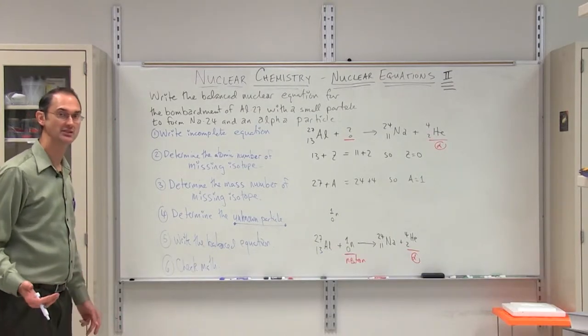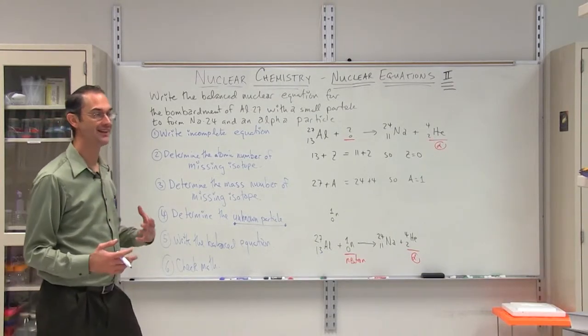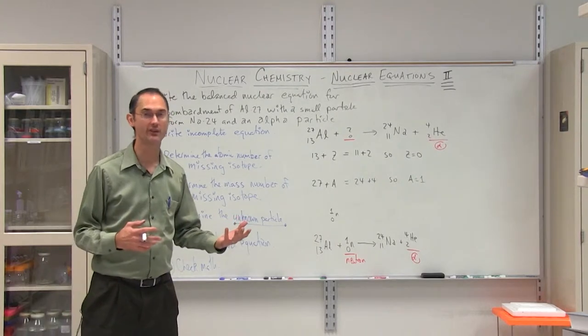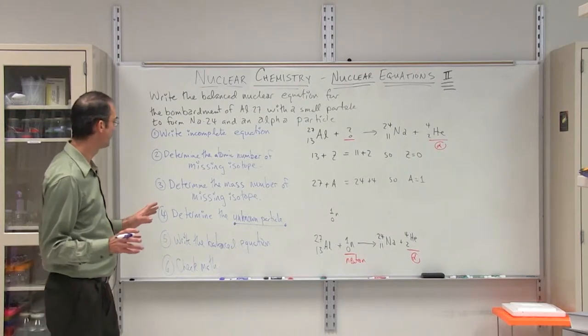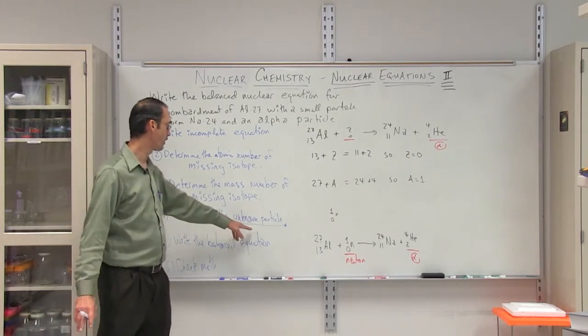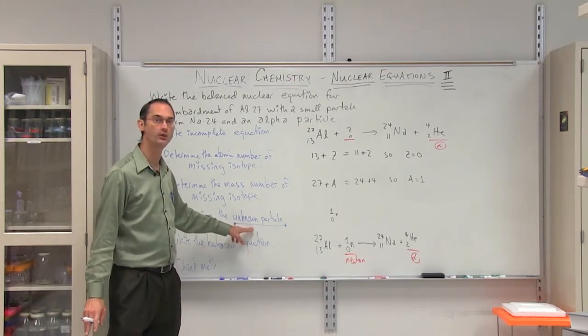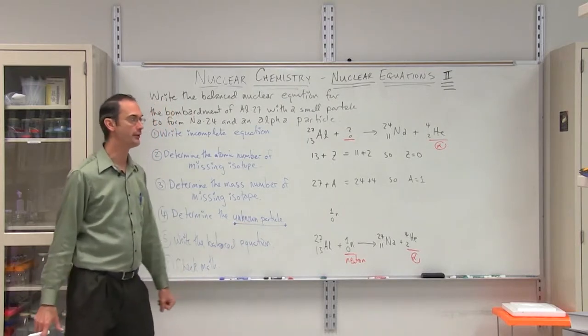This is a somewhat advanced example where you have to find not an unknown product, but you have to find an unknown reactant. This is very much like the previous lecture. Remember, the only change has occurred here in step four, where instead of trying to find an unknown isotope, we're looking for an unknown particle.